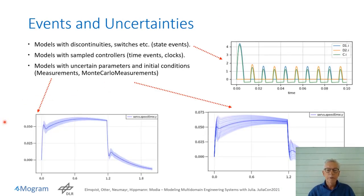The new model uses DifferentialEquations.jl. Models might have discontinuities, such as a diode in an electrical circuit and switches. These are state events. It's also possible to model sampled controllers that have time events and clocks. Models with uncertainties in parameters and initial conditions are supported through Measurements.jl and MonteCarloMeasurements.jl.